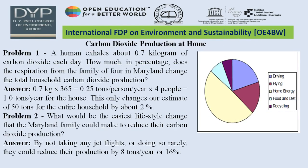Another study covers carbon dioxide production at home. Major sources include driving, flying, home energy, food and diet, and recycling. A human exhales about 0.7 kg of carbon dioxide each day. 0.7 kg times 365 days equals 0.25 tons per person per year; times 4 people equals 1 ton per year for a household. This is only about 2% of the estimated 50 tons for an entire household. The easiest life cycle change a family could make is to not take any jet flights, which could reduce production by 8 tons per year or 16 percent.